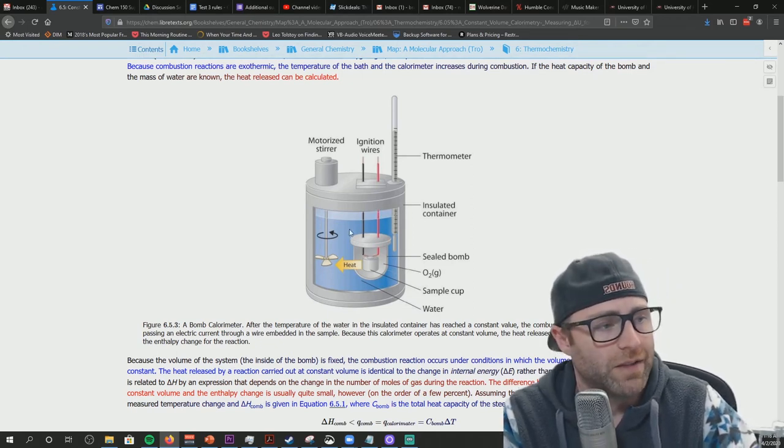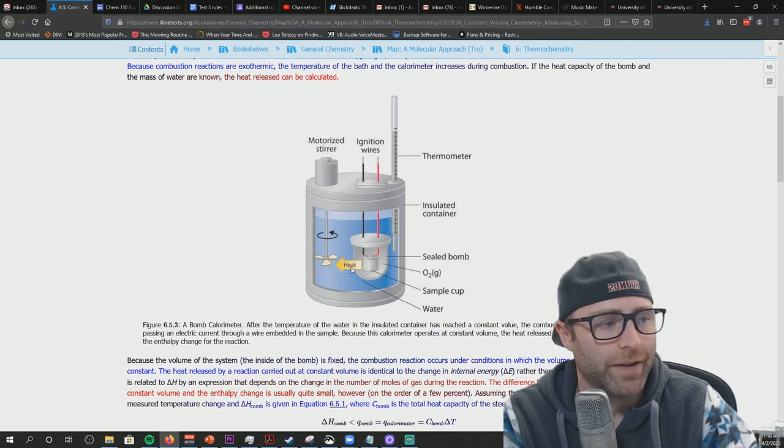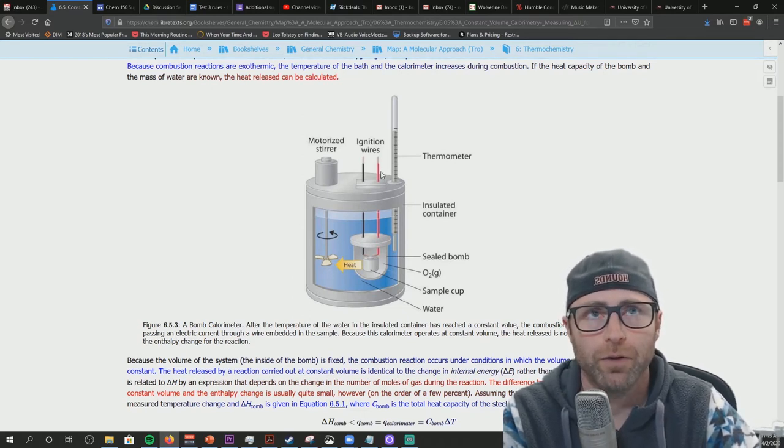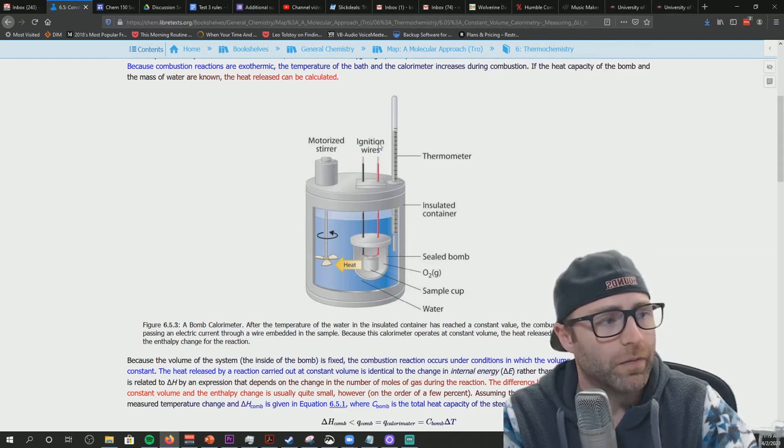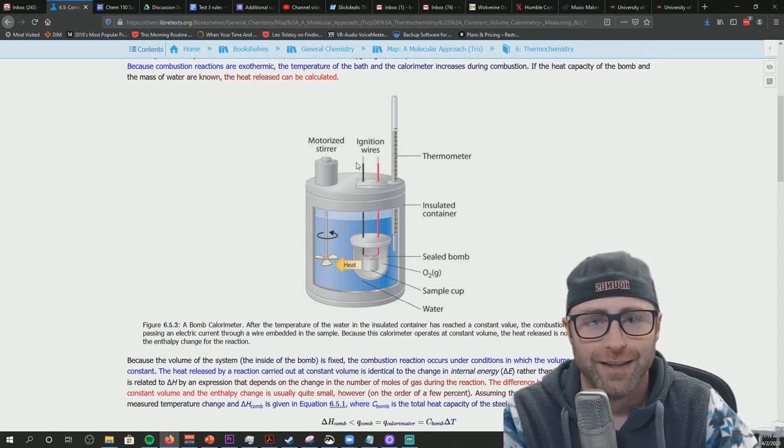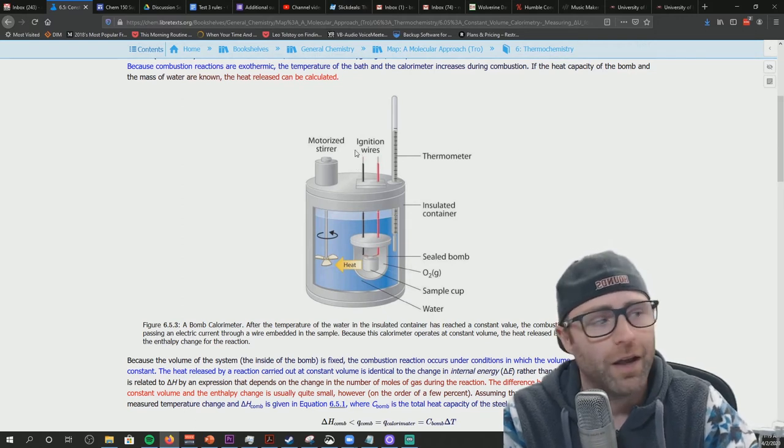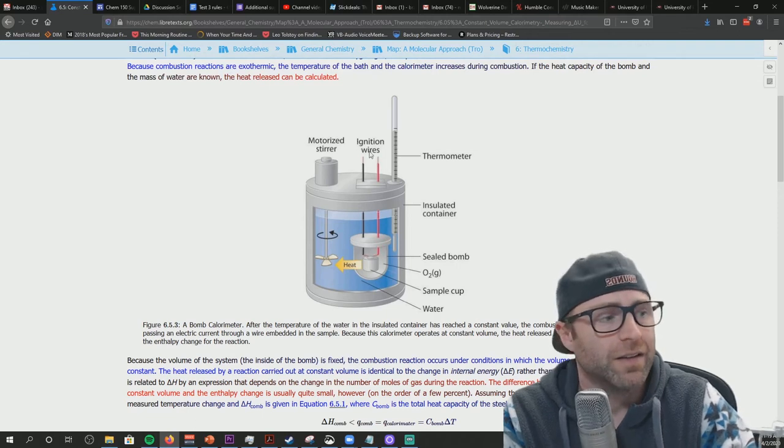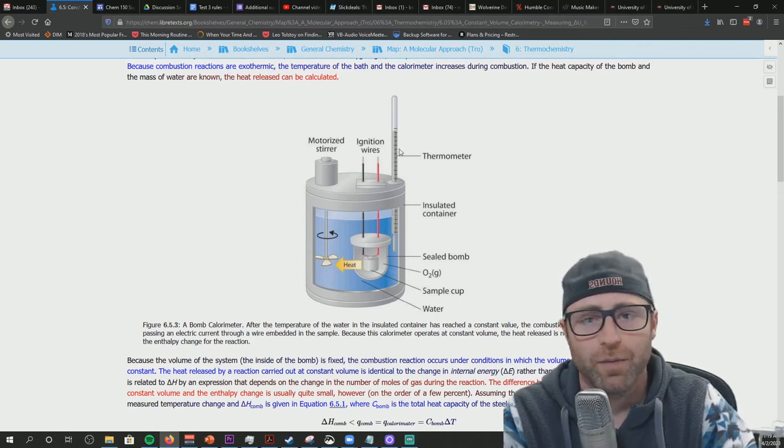So that's like the basic setup of the experiment. That's where like the different components are and why they're there. So then when you light this thing off, this bomb, it's way less exciting than you ever could possibly imagine. So you like connect the wires to a battery, spark happens and you see nothing. You don't see a spark. You see nothing, right? The only thing that you're going to see if the experiment goes right is the temperature on your thermometer is going to change.